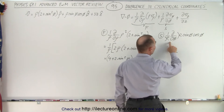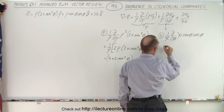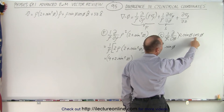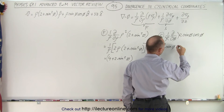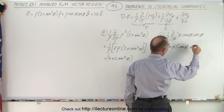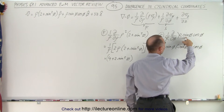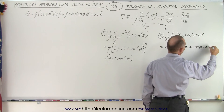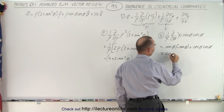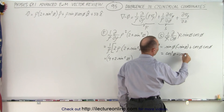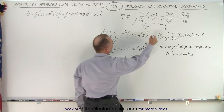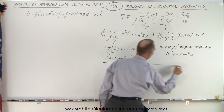Now we're taking the partial derivative of a product. So this is equal to the first times the partial derivative of cosine with respect to phi — the derivative of cosine is negative sine — plus the second times the derivative of the first, which is cosine of phi. So we end up with cosine squared of phi minus sine squared of phi.